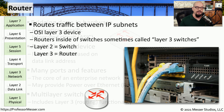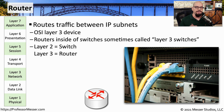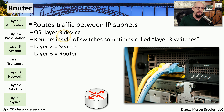This routing functionality can be very useful if you need to connect two different IP subnets. To do that, we need a router, which makes decisions based on the IP address — the OSI Layer 3 address — of the network traffic.